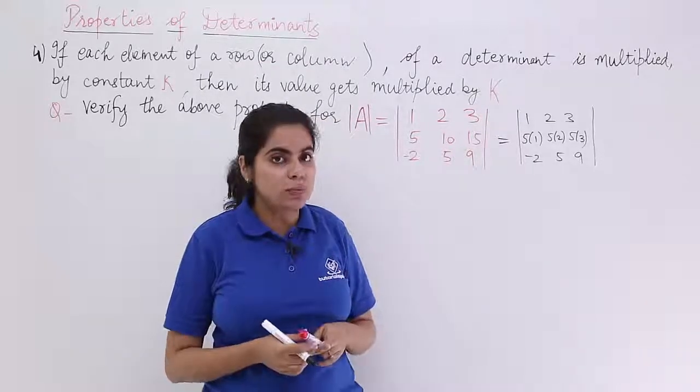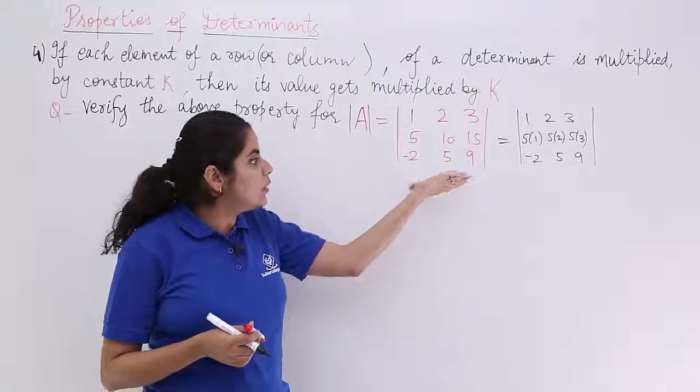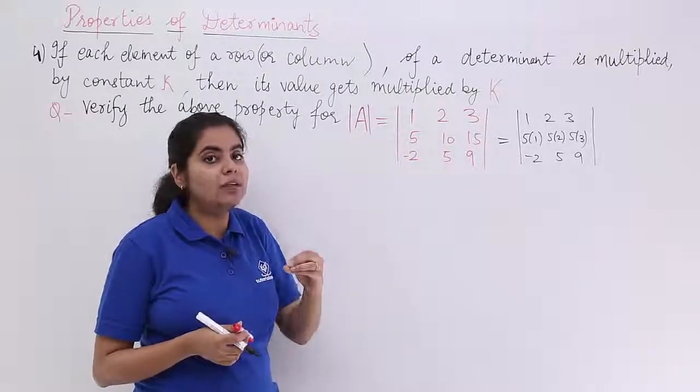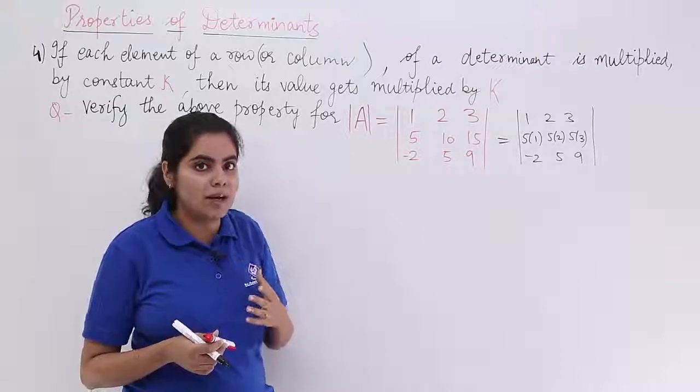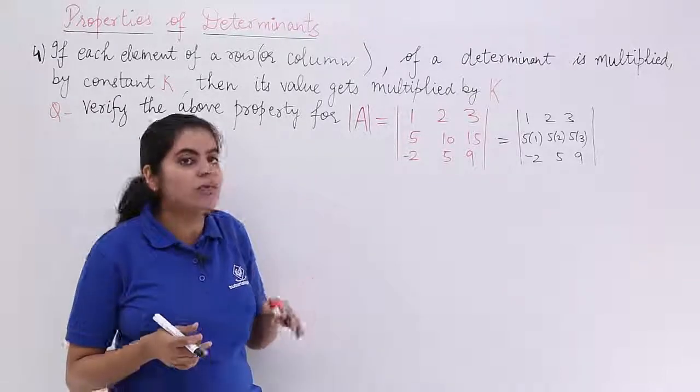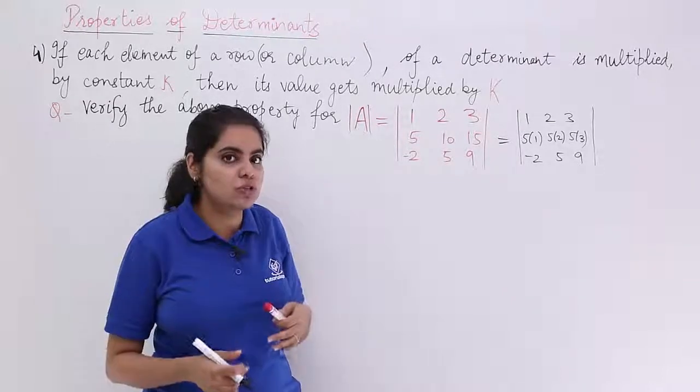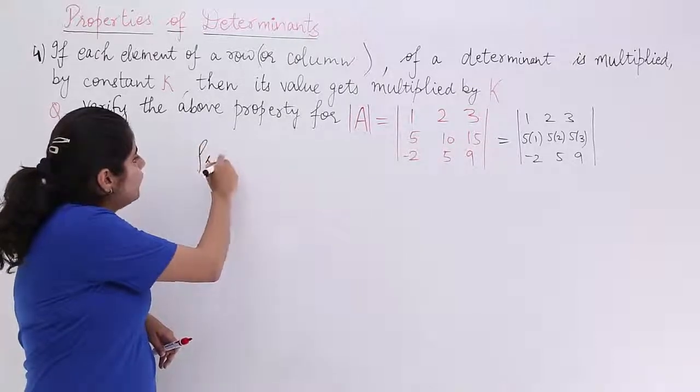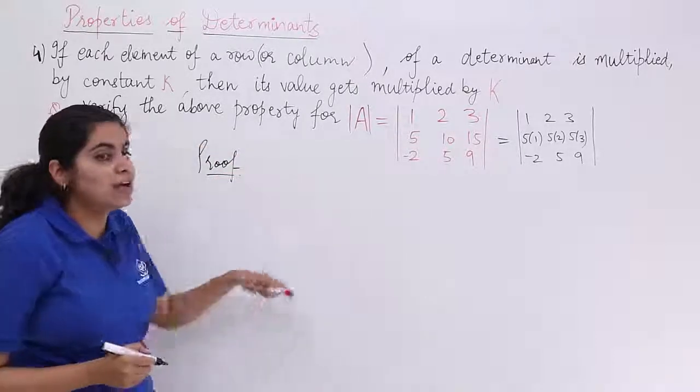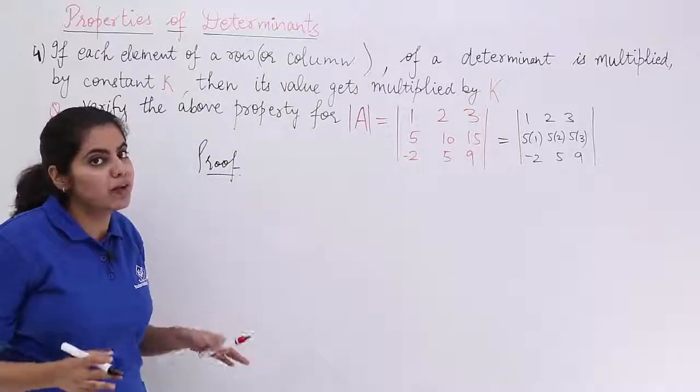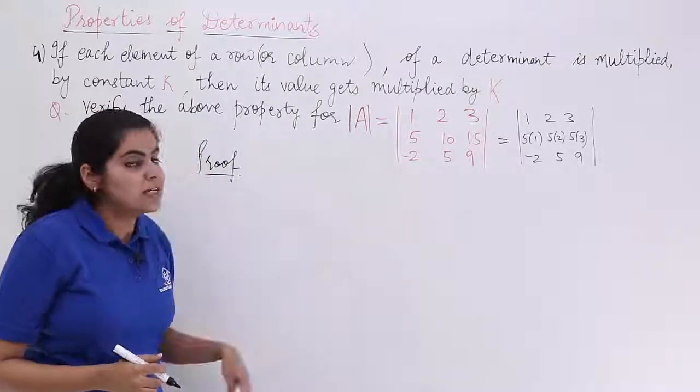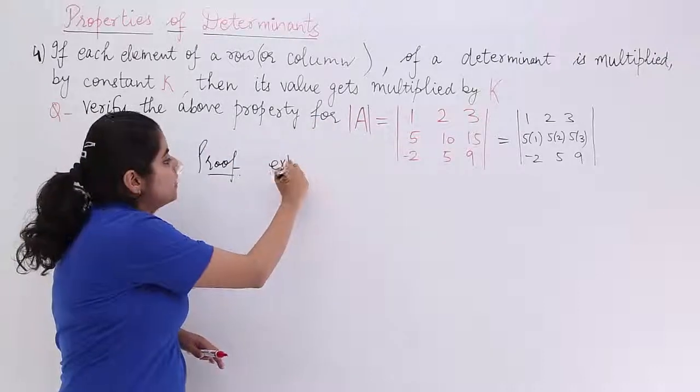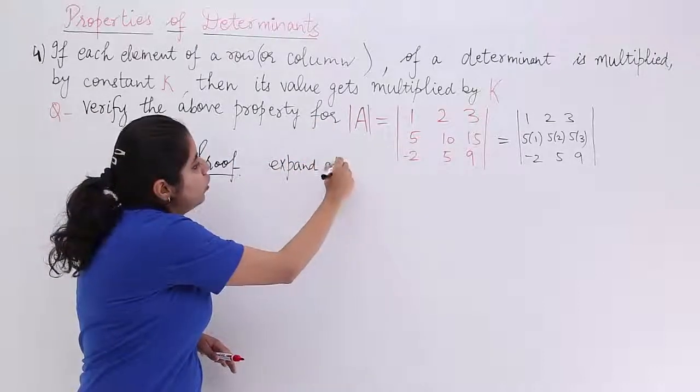So the answer should be that whatever the value of determinant is there, the value gets multiplied by that. Now let's see how to do it. The proof would be we have to expand it. Forget about having any proportional elements, just expand along row 1.